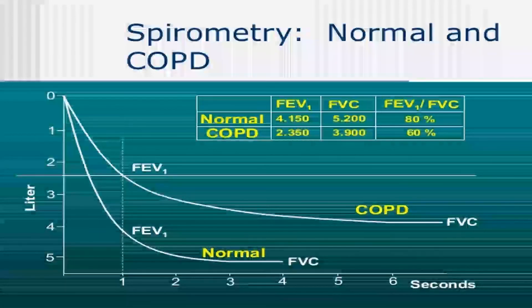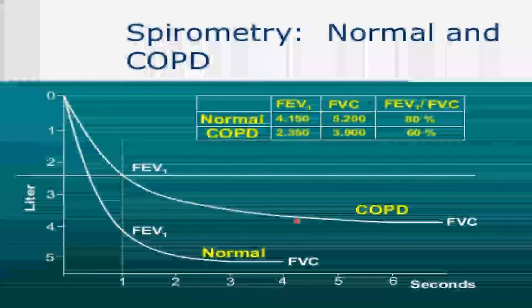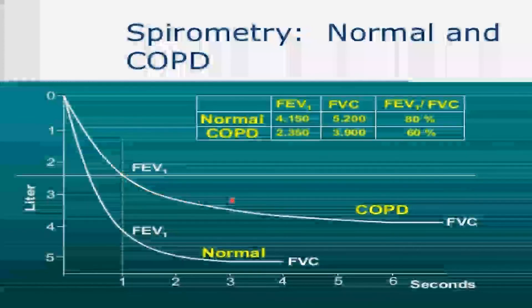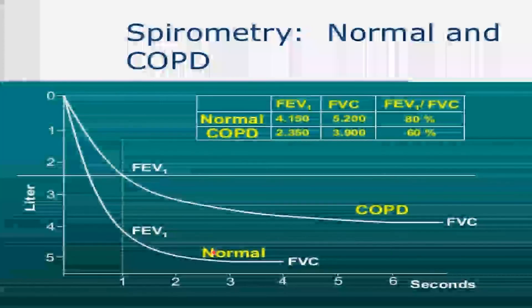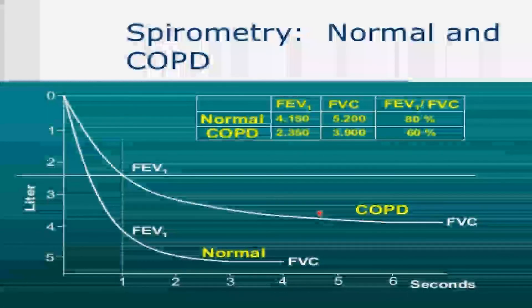Normally, the forced expiratory volume will be like this. In COPD, they cannot be able to expel forcefully that much. Here, we see almost 5 liters. Here, only 3 liters.